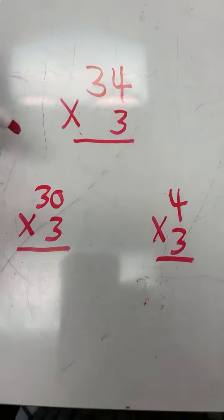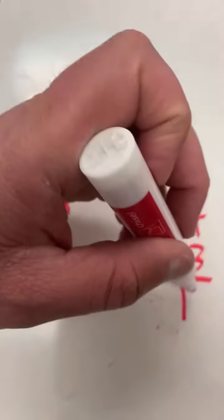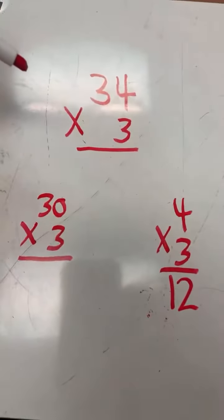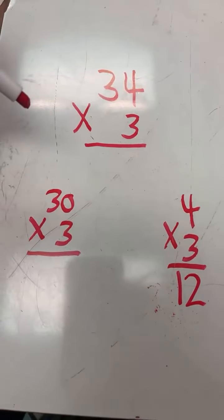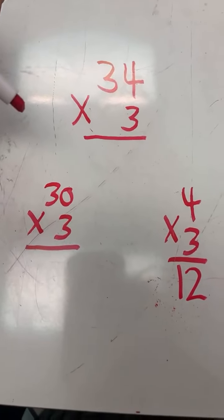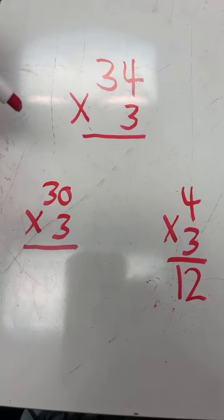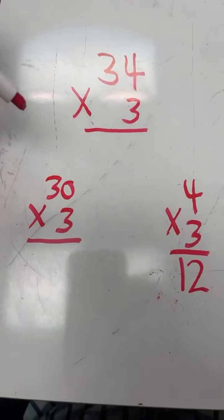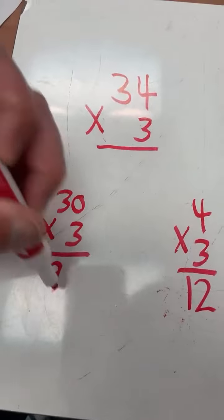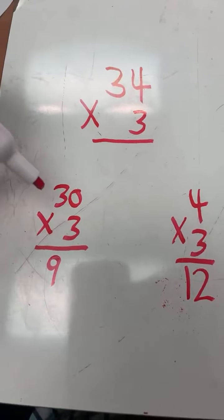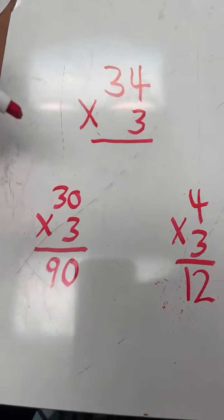So 4 times 3 equals 12. Now for 30 times 3: to find 30 times 3, we multiply 3 times 3, then add a 0 to our answer. 3 times 3 equals 9, and if we add a 0 to our answer, then our answer becomes 90.